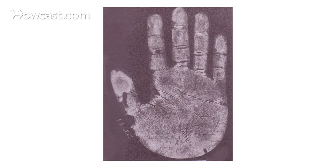Every once in a while you'll get to see a hand — and here we're going to put up the image of Einstein's hand — where the headline is both clear and long, and has the extra feature at the end of having a fork on it, so that he always sees two sides of everything.